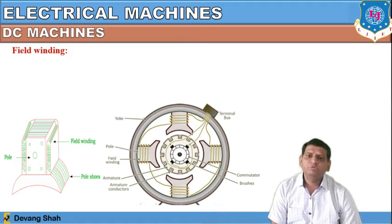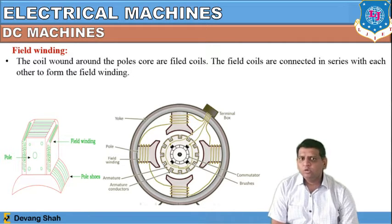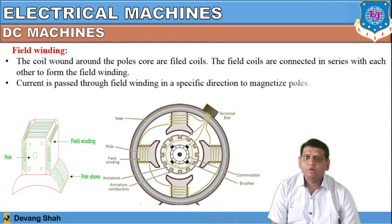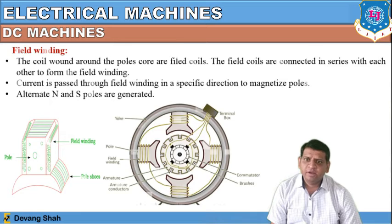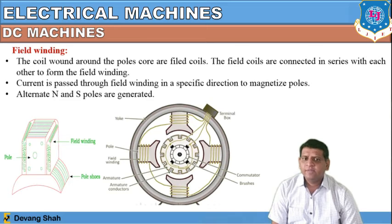The field winding is the coil wound around the pole. The field coils are connected in series with each other to form the field winding. Current is passed through the field winding in a specific direction to magnetize the pole, and alternate N and S poles are placed together — so alternate poles are generated. Once these carry current, there is a production of magnetic flux inside the air gap.